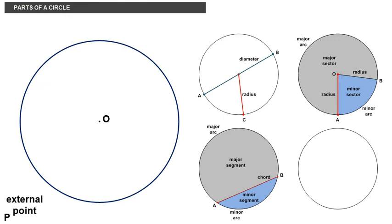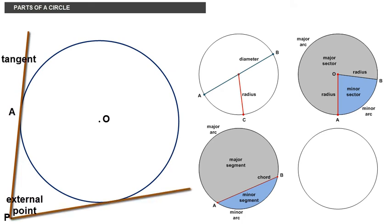For example, from this external point P, a line can be drawn to touch the circle at this point A on its circumference, thus a tangent. Another line can be drawn on the other side from the same point P to a point on the circumference B, thus another tangent.